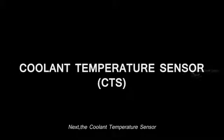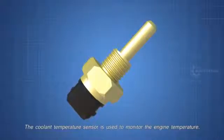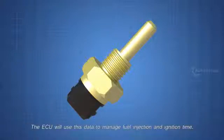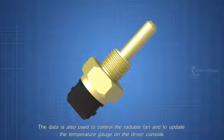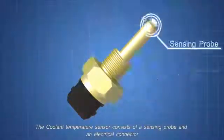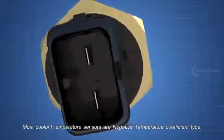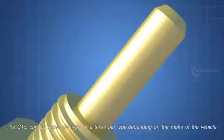Next, the coolant temperature sensor. The coolant temperature sensor is used to monitor the engine temperature. The ECU will use this data to manage fuel injection and ignition time. Some engines have more than one coolant temperature sensor. The data is also used to control the radiator fan and to update the temperature gauge on the driver console. The coolant temperature sensor consists of a sensing probe and an electrical connector. Most coolant temperature sensors are negative temperature coefficient type, which means as the temperature increases, the resistance will decrease. The CTS can be a 2 pin type or a 3 pin type, depending on the make of the vehicle.